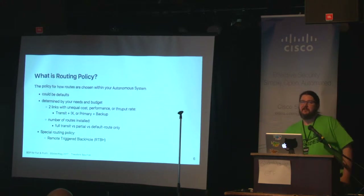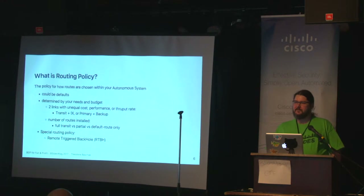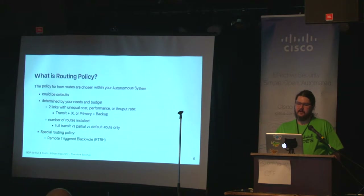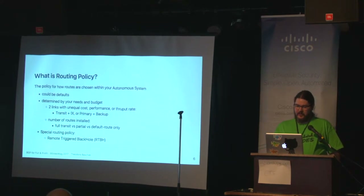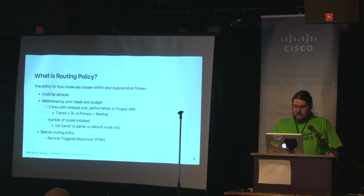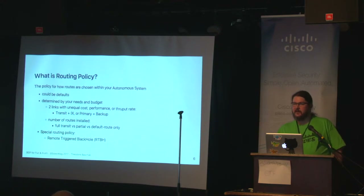Your routing policy might be determined by your needs and budget. Maybe you don't have the money to buy really expensive routers to hold full routing tables, so you work with defaults or a subset of routes. You might have two links with unequal monetary cost, unequal performance, or unequal throughput — maybe a transit connection plus an internet exchange, or a primary and a backup. Routing policy is also determined by the number of routes installed: full transit, partial, or default route only. There are also special routing policies like black hole injection, which I'll cover later.